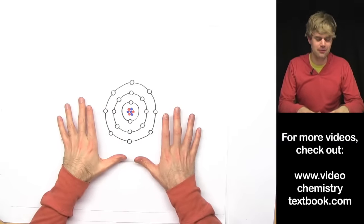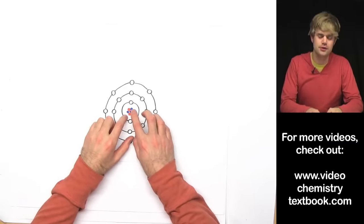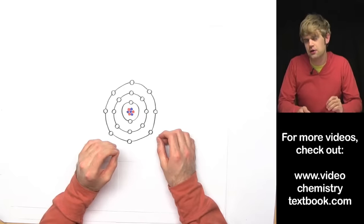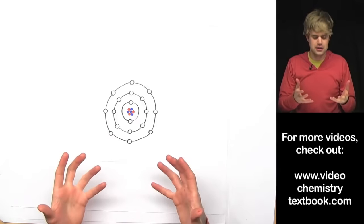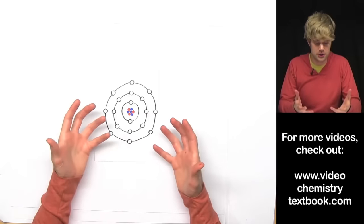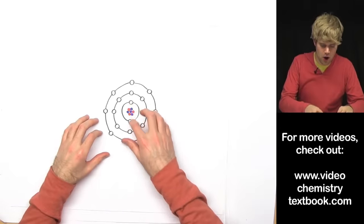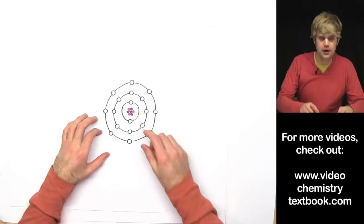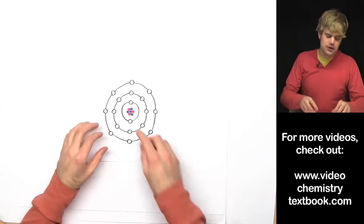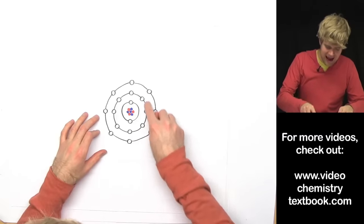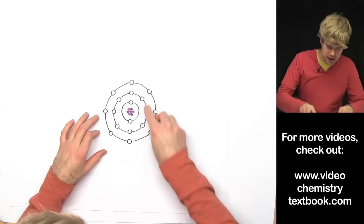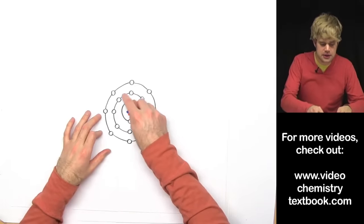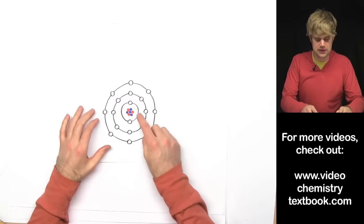Check out this diagram of an atom. In the middle is the nucleus with protons and neutrons. Each one of these little circles represents a spot that could hold one electron — you can think of these as parking spots or theater seats for electrons. These spots are organized into circles called energy levels or shells, which show the path electrons take as they spin around the nucleus. Energy levels arrange electrons into different groups at varying distances from the center of the atom.